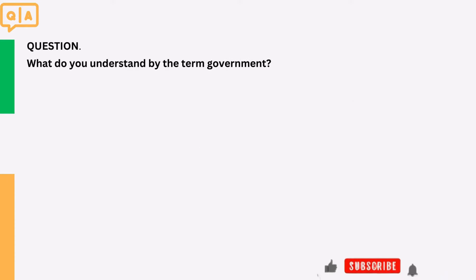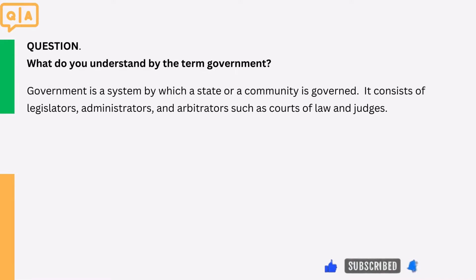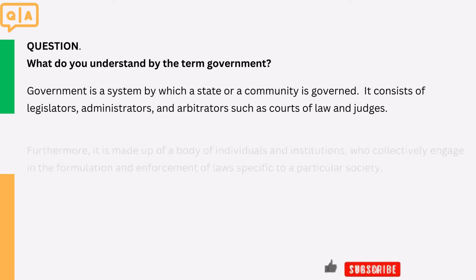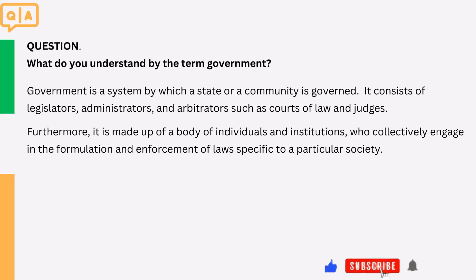Question: What do you understand by the term government? Government is a system by which a state or a community is governed. It consists of legislators, administrators, and arbitrators such as courts of law and judges. Furthermore, it is made up of a body of individuals and institutions who collectively engage in the formulation and enforcement of laws specific to a particular society.